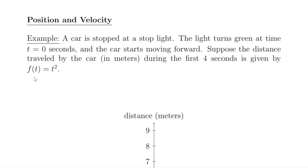So what this means, for example, is that when t equals three — after three seconds — the car has traveled nine meters, three squared. When t is two, the car has traveled four meters. When t is zero, it has of course traveled zero meters.